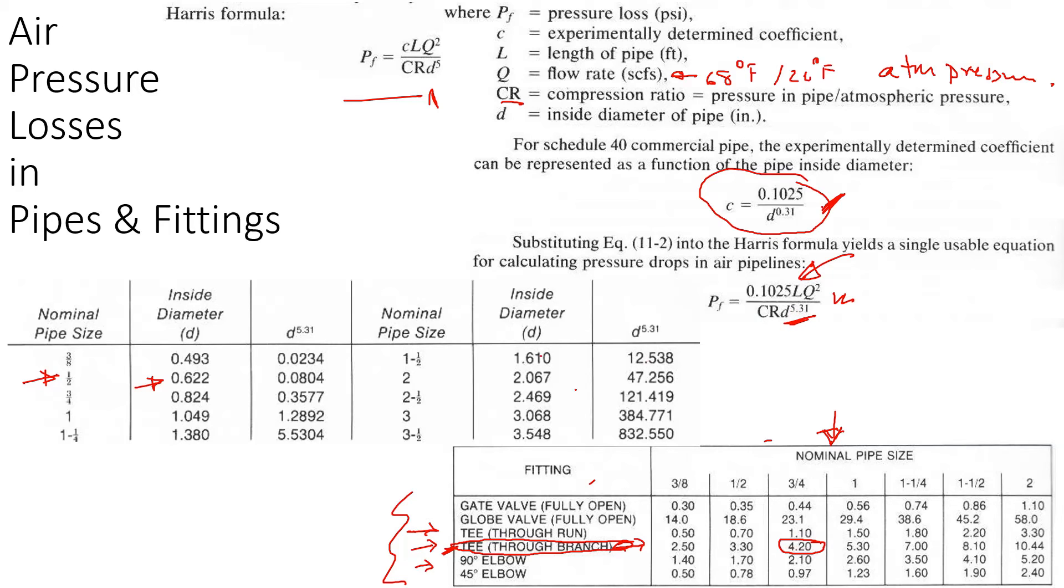In the old days they didn't have fancy calculators, so D to the power 5.31 is also calculated here which you can use. Just calculate the compression ratio and the flow rate, which will typically be given, plus the length, and then you can find the compression ratio.